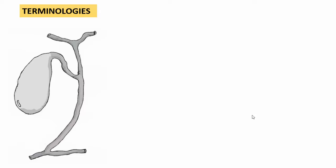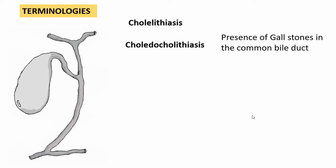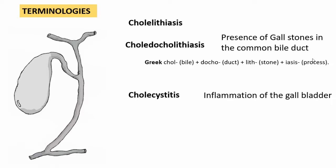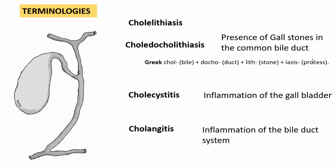Before moving on to the various etiological factors, let us clarify some confusing terminologies. Cholelithiasis refers to gallstones formed within the gallbladder. Choledocholithiasis means the presence of gallstones in the common bile duct — 'docho' means duct in Greek. Cholecystitis is inflammation of the gallbladder, and cholangitis is inflammation of the bile duct system.